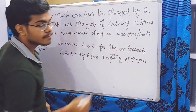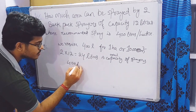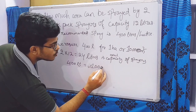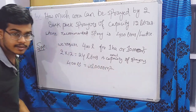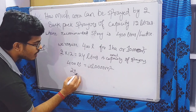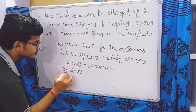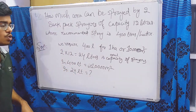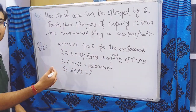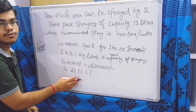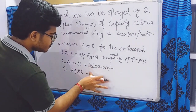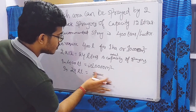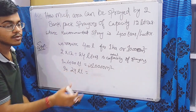If 400 liters can cover 10,000 square meters, then in 24 liters how much area can we spray? We use the unitary method to calculate this. First we find how much area one liter can spray, which is 10,000 divided by 400.